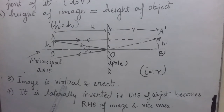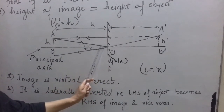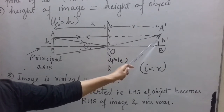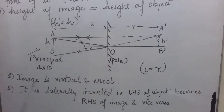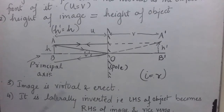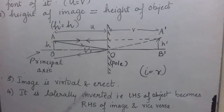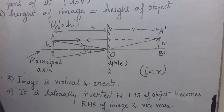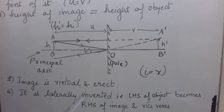The last property is that the image formed by a plane mirror is laterally inverted. Laterally inverted means there is inversion, but not upside down — the left-hand side of the object becomes the right-hand side of the image, and the right-hand side of the object becomes the left-hand side of the image. You must have noticed that when you stand in front of a mirror and move your left hand, the image's right hand moves. So remember these four important properties of the image formed by a plane mirror.